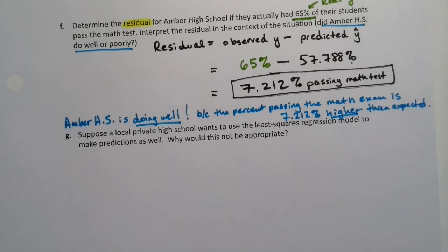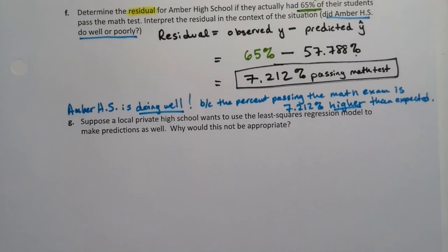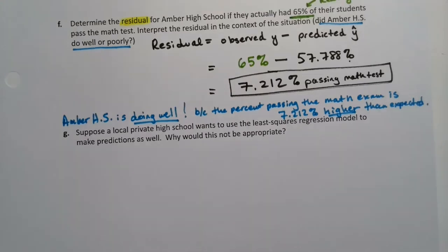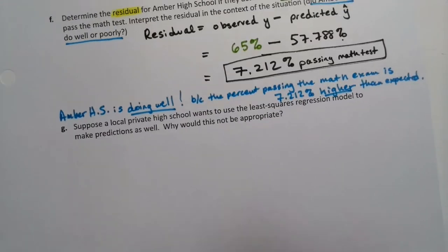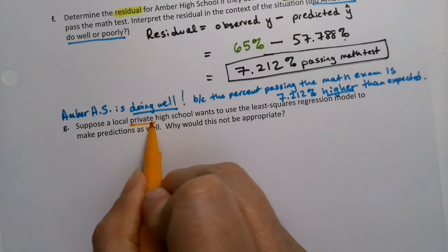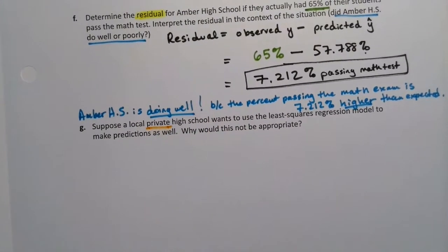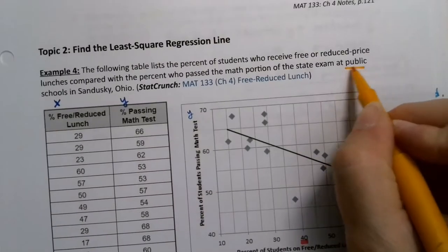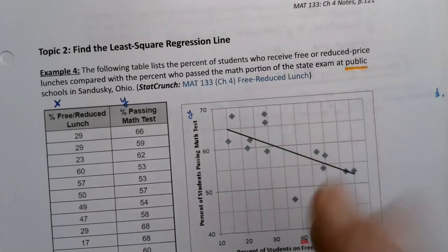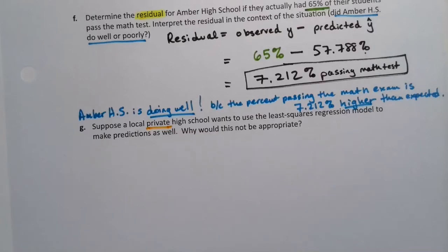All right, now suppose a local private high school wants to use the least squares regression model to make predictions as well. Why would that not be appropriate? So the key in that is that they're private high school. Now this entire data set was built from public high school, public school information. So let me underline that right here. So it says private high school right there. But if we go back to the problem, it mentioned right here that this was public school data.